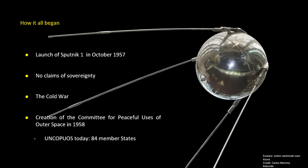In the context of the Cold War, the US, the USSR, and in general the world were in need of definitions, rights and obligations to bind states. Therefore, in 1958 the UN created the Committee for the Peaceful Uses of Outer Space, in order to consider the activities and resources of the United Nations.